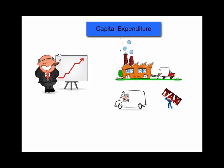Expenditure is another word for spending, or something that the company buys. Capital expenditure applies when the company uses money in the bank to purchase an asset — such as land, a factory, or a delivery van — and it is expected that the asset will last longer than one year.